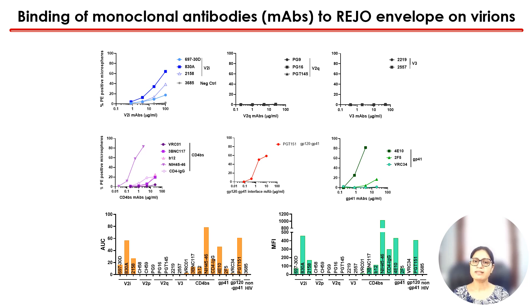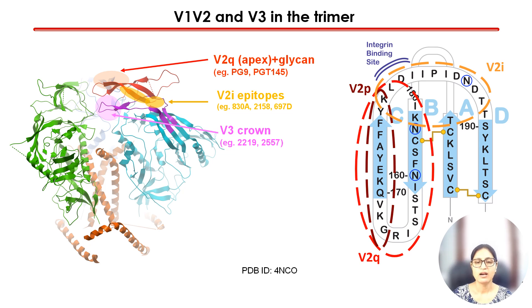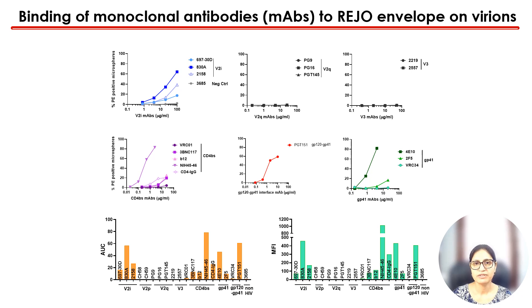The lack of V3 antibody binding is expected, as in the closed conformation the V3 is tucked underneath the V1/V2 loop. Although this is a static picture, the HIV envelope is breathing, so V3 is not always in that buried position. The broadly neutralizing antibodies against the V2 apex — also called V2Q or V2 quaternary antibodies — are located at the top of the trimer and are quite exposed. So coming back to the data, while V3 not binding is expected, V2Q and V2P antibodies not showing binding was not expected.